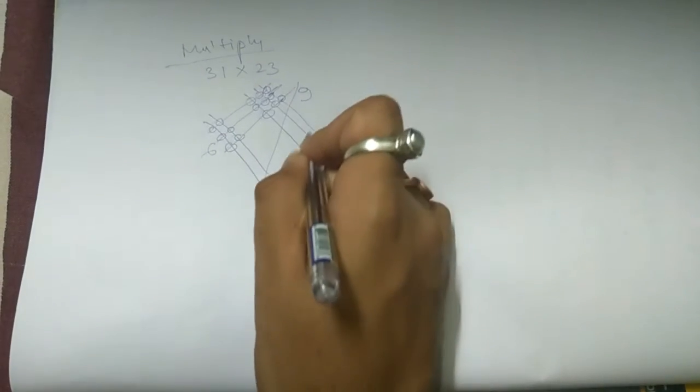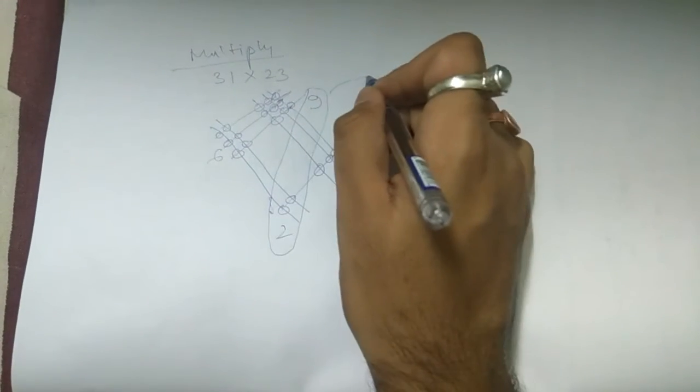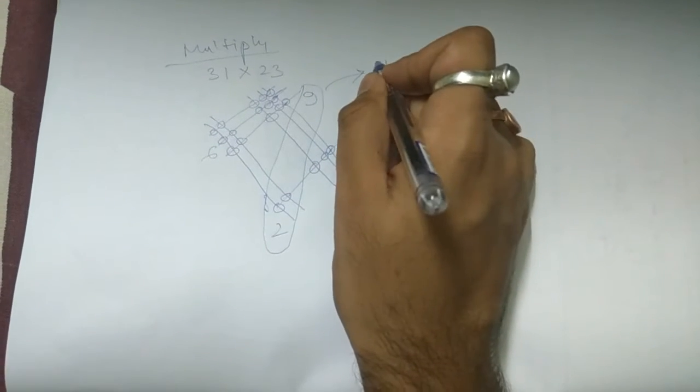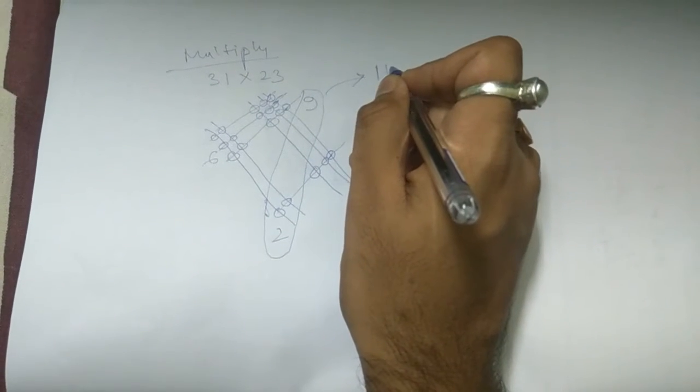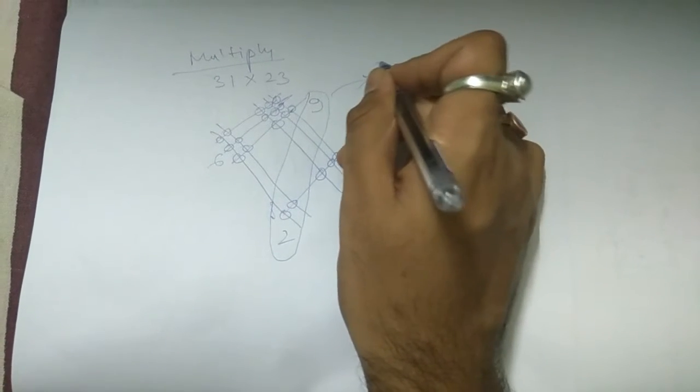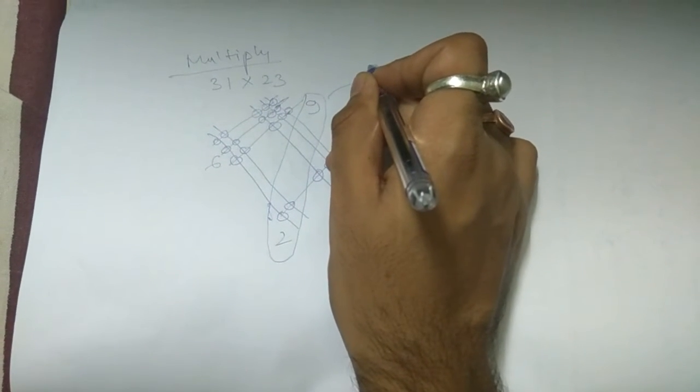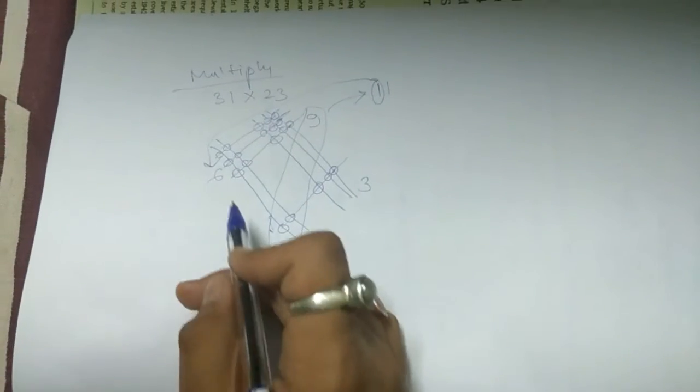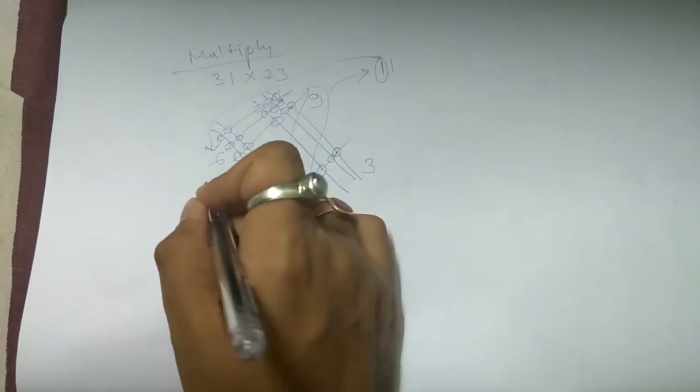Now just add these two. Here are 2 points of intersection, so add these two. What do we get? 11. As it is a double digit number, we have to carry 1 from 11 to this 6.